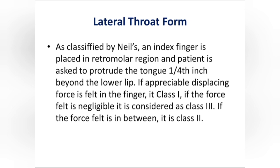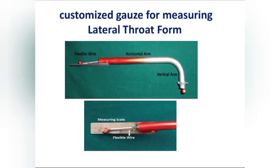You have to make the flange according to the depth of the lateral throat form. But this measuring method will vary from one observer to another. For that, recent studies show that a customized gauge for measuring lateral throat form gives a standard diagnosis and standard length measurement. It is a simple instrument with a flexible wire, horizontal arm, and vertical arm — you just place it inside the retromolar fossa area and measure by scale.